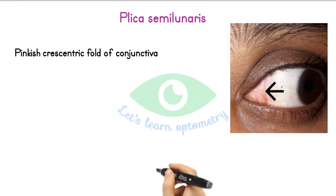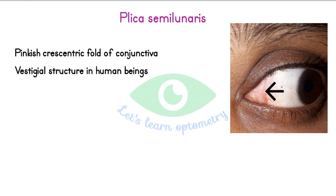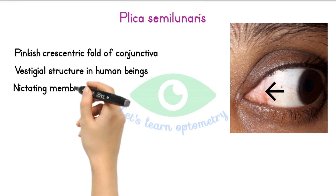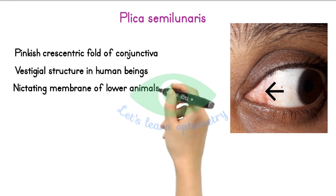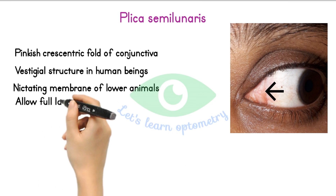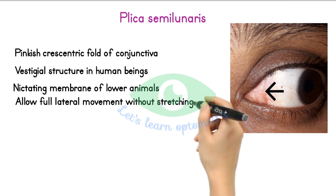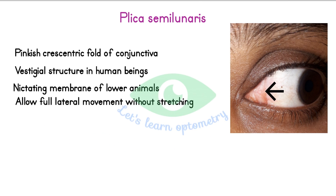Plica semilunaris is a pinkish crescent-shaped fold of conjunctiva in the medial canthus. It is a vestigial structure in human beings and represents the third eyelid of lower animals. The main function of the plica is to allow full lateral movement of the eyeball without tissue stretching.